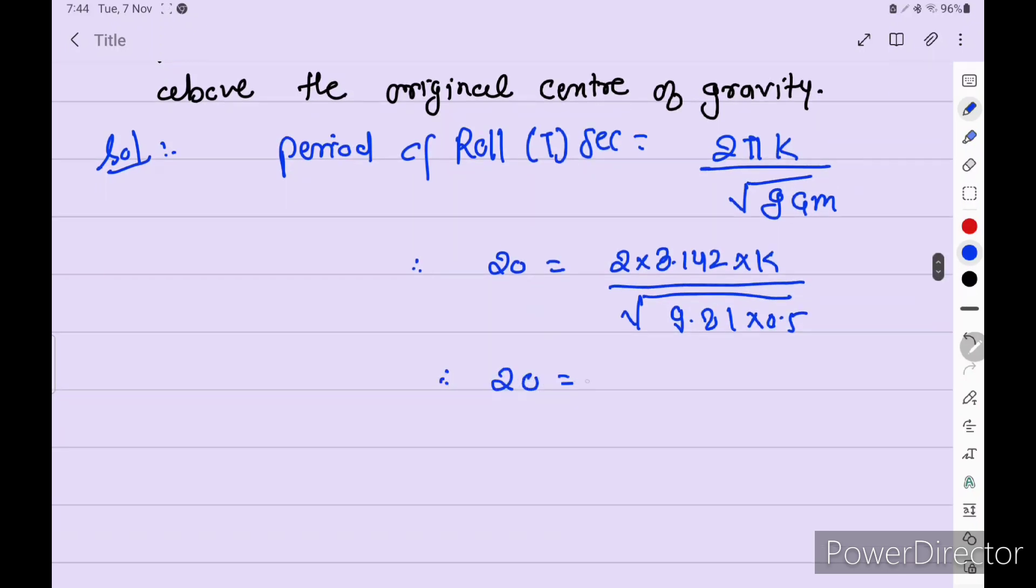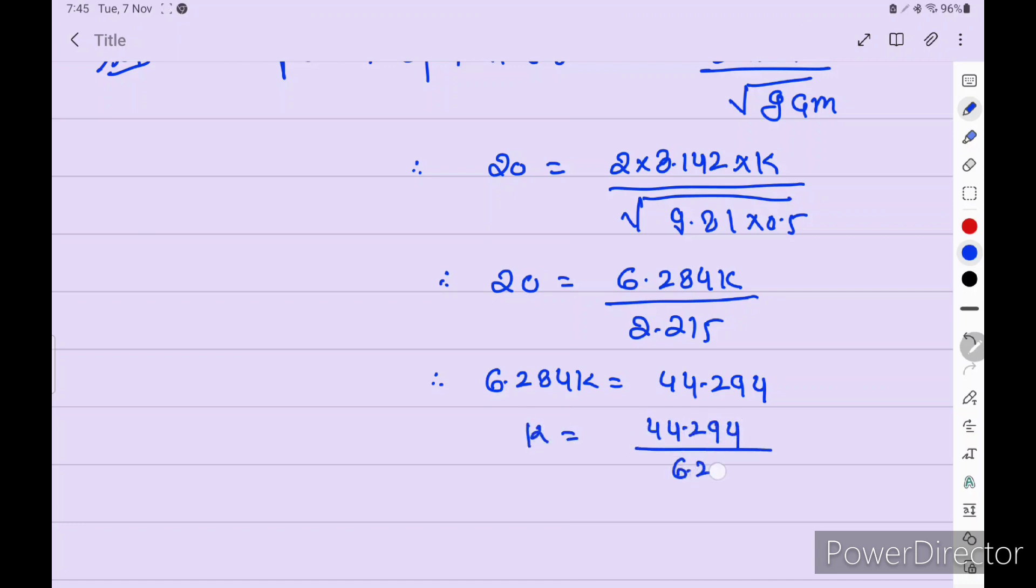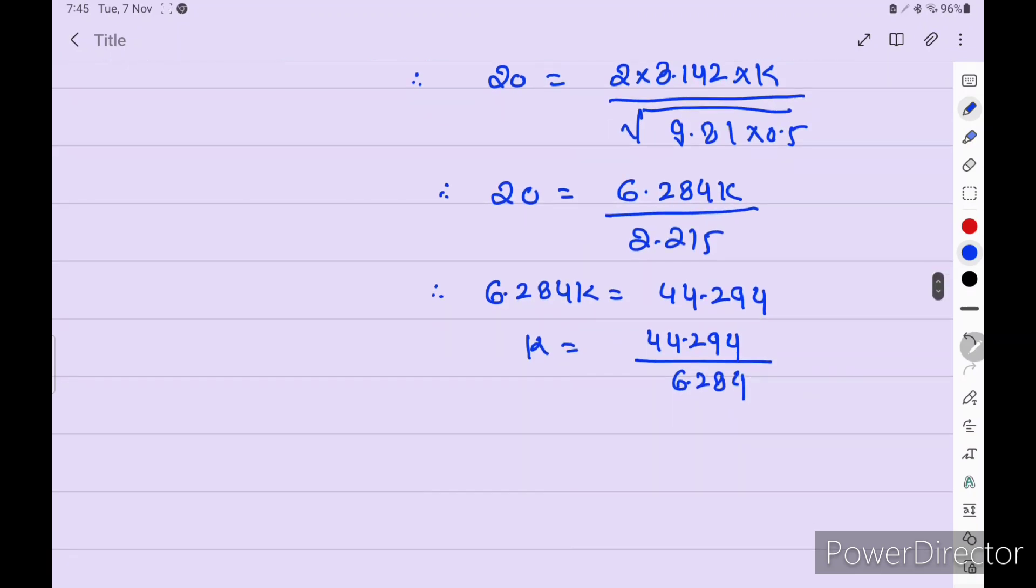Radius of gyration, 9.81 into 0.5. We get 20 equals 6.284k divided by 2.215. We multiply and break the under root. We get 6.284k equals 44.294. So k equals 44.294 divided by 6.284. We get the radius of gyration is 7.05 meters. This comes for 15 marks.